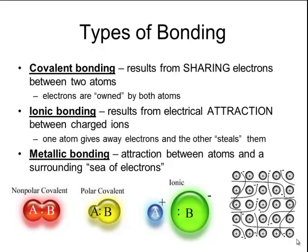The last kind of bonding is called metallic bonding, and this involves an attraction between metal atoms and their surrounding electrons, where the electrons are free to flow around all of the atoms in a sea of electrons. We'll learn more detail about metallic bonding later on in the chapter.